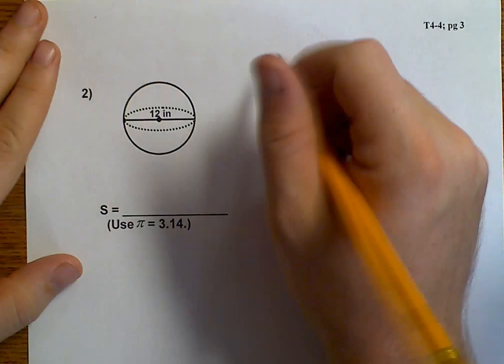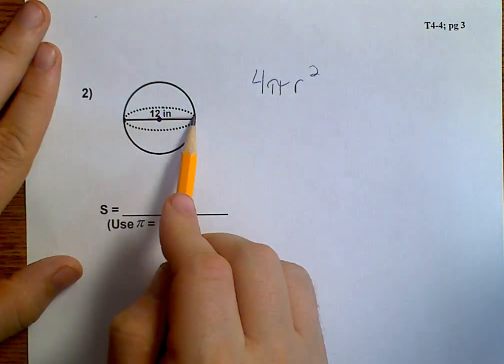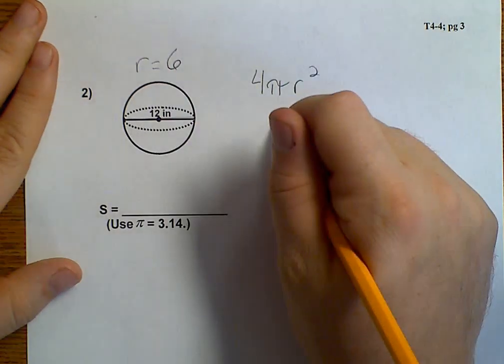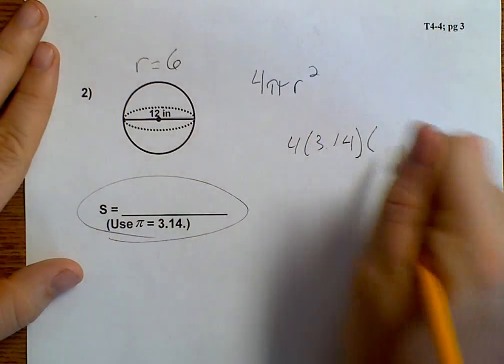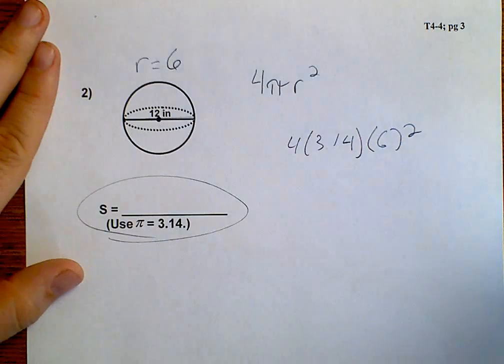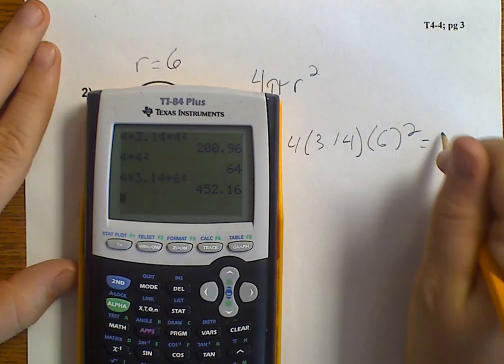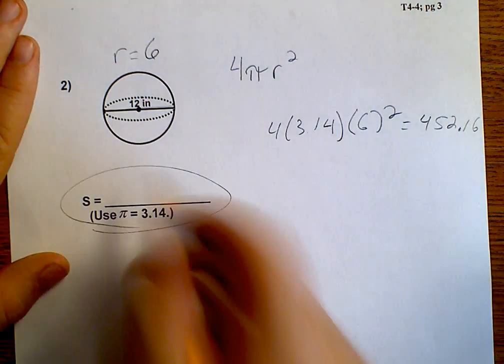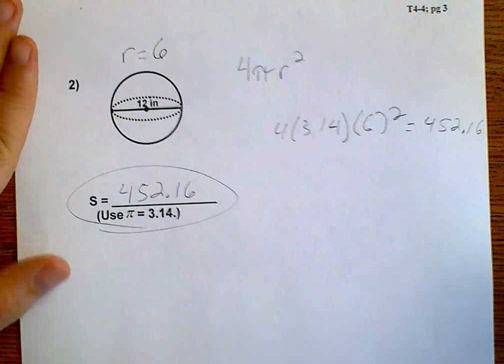We're looking at 4 pi r squared. Well, its diameter is 12, which means that the radius is 6. And we want to use 3.14. So, 4 times 3.14 times 6 squared equals 452.16.